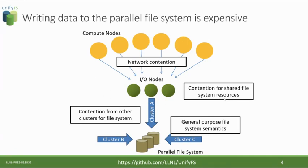The parallel file system is a shared resource across all the jobs running on the cluster you're on, as well as jobs running on other clusters in your compute center, because typically we share parallel file systems across clusters for convenience so you can access your data. So there's contention, which means your job could experience I/O slowdowns — I/O operations lasting as long as tens of minutes where your application is blocked and not making any forward progress.